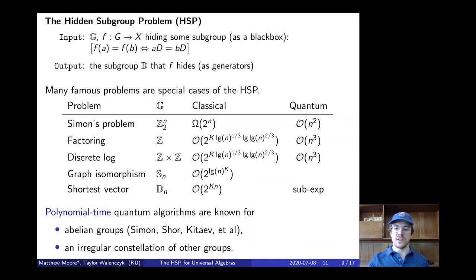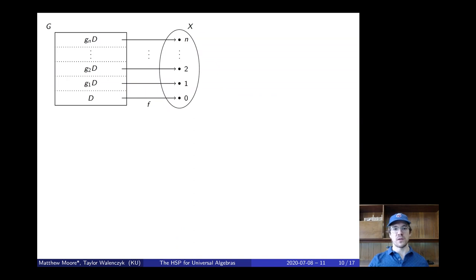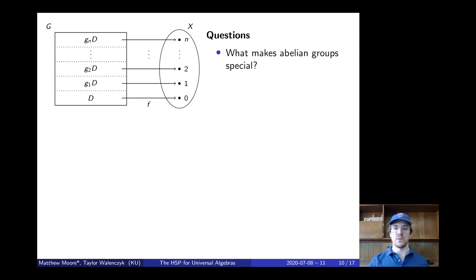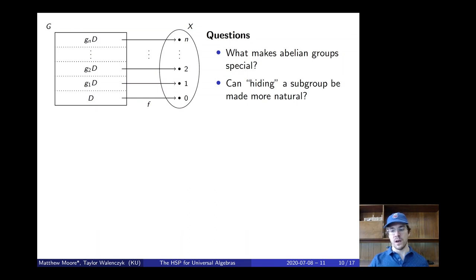One way to resolve these ad hoc proofs is to try to generalize the problem. Oftentimes, things that seem messy or complicated in a certain domain are actually straightforward and elegant in the proper general domain. So in an attempt to get deeper insight into the hidden subgroup problem, we can seek to generalize it. Two questions to keep in mind: What makes abelian groups special — why do they have nice polynomial time quantum algorithms? And can we make the definition of hiding a subgroup more natural in the generalization?